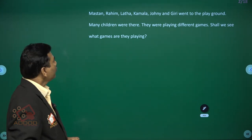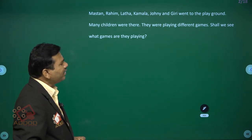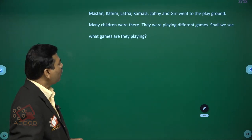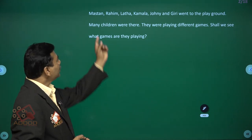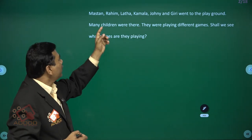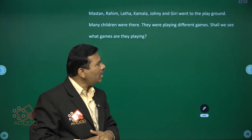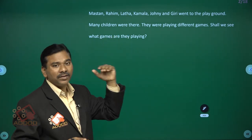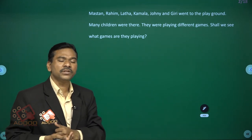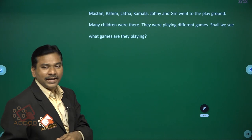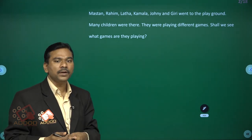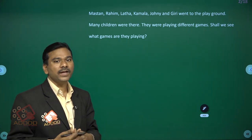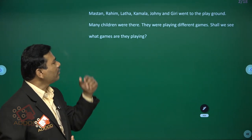In this situation, Mustan, Rahim, Lata, Kamala, Johnny and Geary went to the playground. Many children were there playing different games. Some students were playing cricket, karate, and volleyball. Some girls were playing skipping. Shall we see what games they are playing?